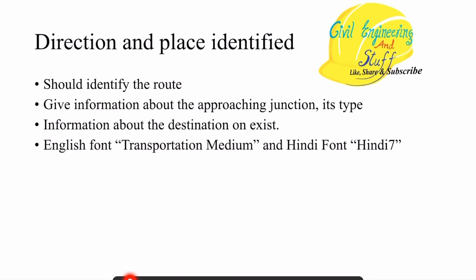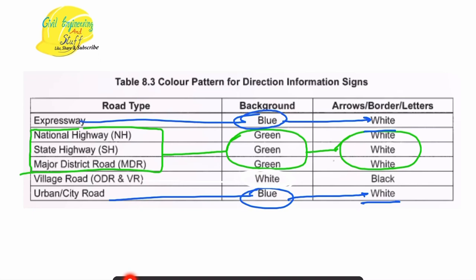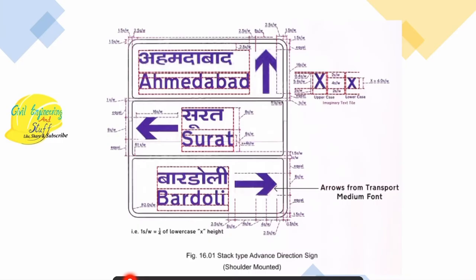Informatory signs are used to give information about the road, the route, and the facilities available. These are the fonts used for adding information. For example, a sign with green background and white text would be installed on a national highway, state highway, or major district road — you can see it is rectangular in shape with green background, white text, and white arrows. The code specifies each and every detail — spacing, font size, spacing from the bottom and top — nothing is random.